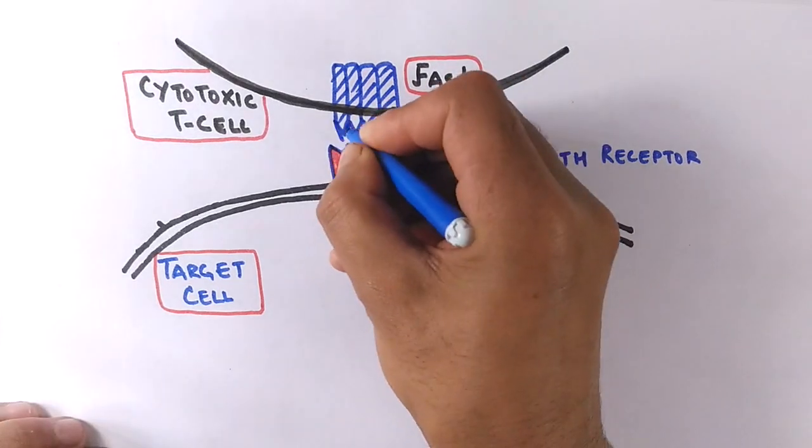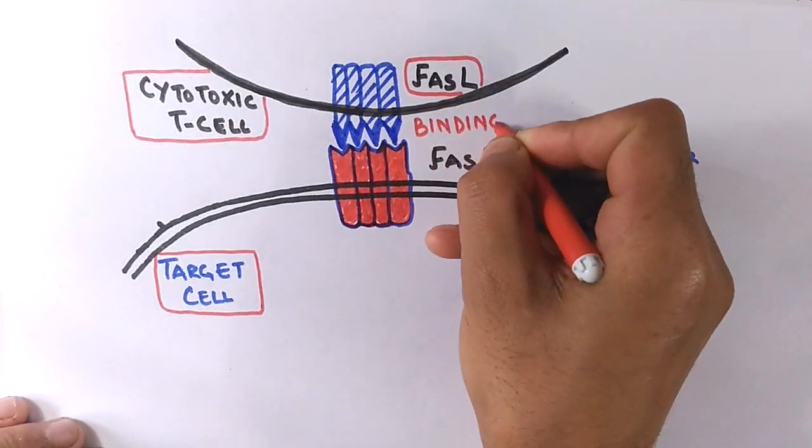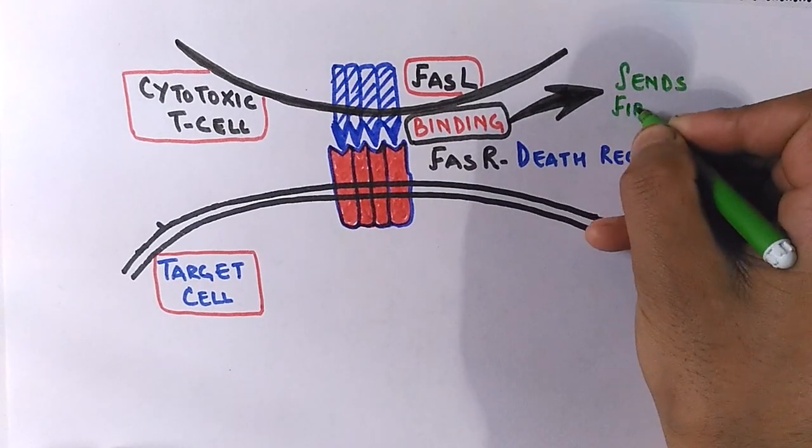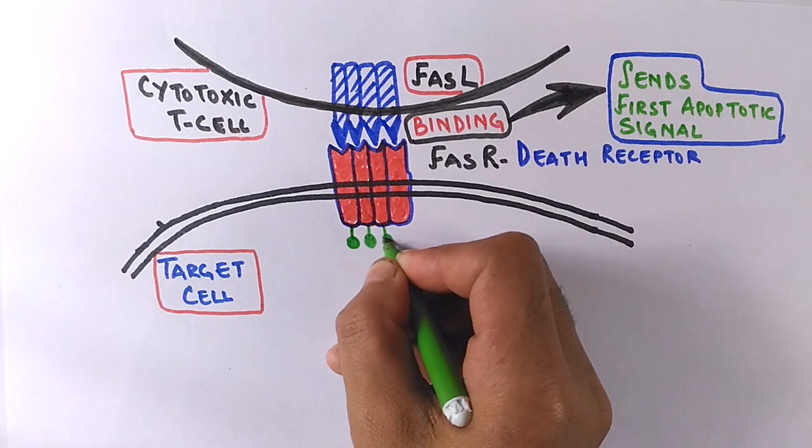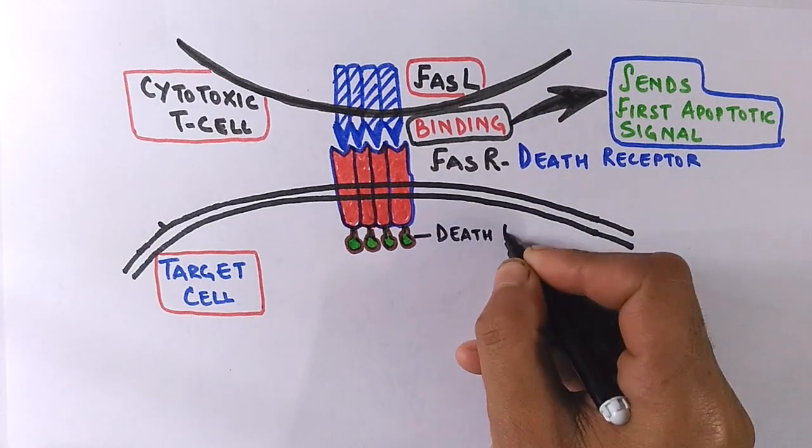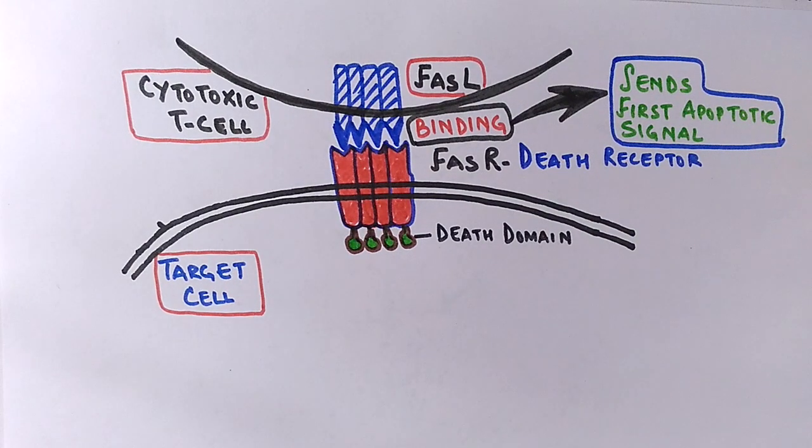So when the FAS ligand and FAS receptor bind together, the binding sends the first apoptotic signal. Also remember here that FAS receptor protein has got a death domain in its intracellular part as you can see here.